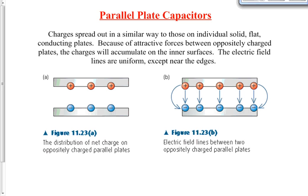Let's look at one final diagram: parallel plate capacitors. We've got two charged plates — one positively charged, one negatively charged. These are the parallel plates we discussed with the electric field equation E = ΔV/Δd. The electrons go to the outer surface, and although it looks like the inner surface between the plates, it's still the outer surface — just the side of the outer surface of the bottom plate that faces the other plate.